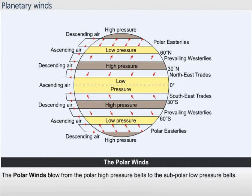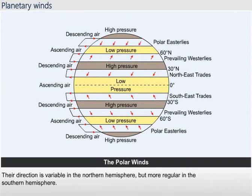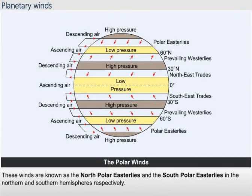The polar winds blow from the polar high-pressure belts to the subpolar low-pressure belts. Their direction is variable in the northern hemisphere but more regular in the southern hemisphere. These winds are known as the north polar easterlies and the south polar easterlies in the northern and southern hemispheres respectively.